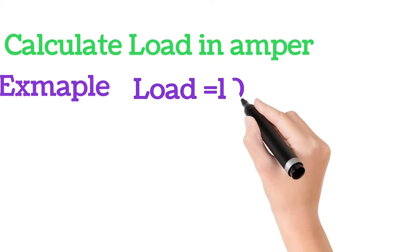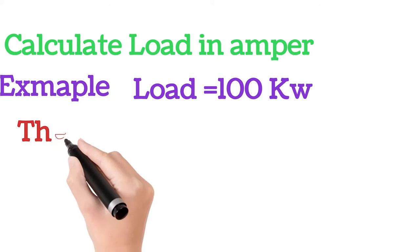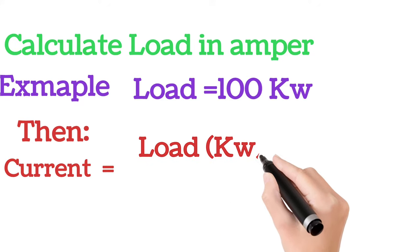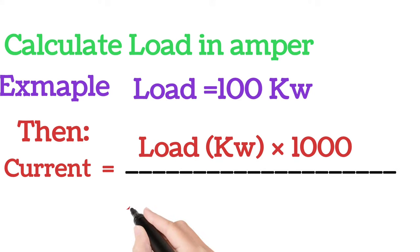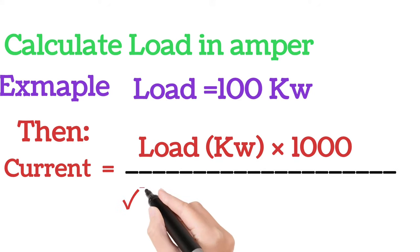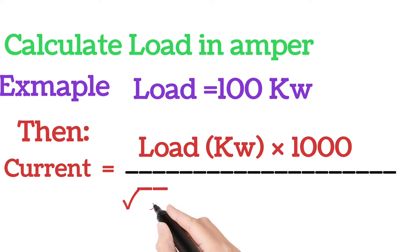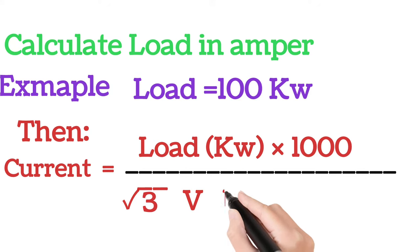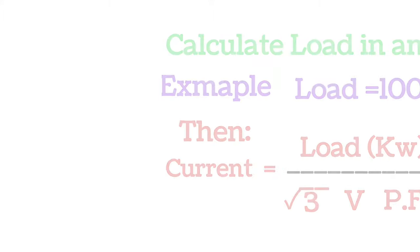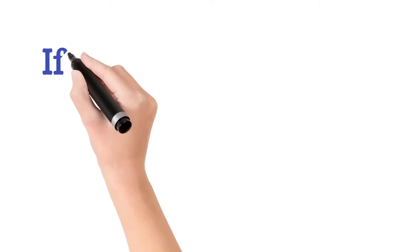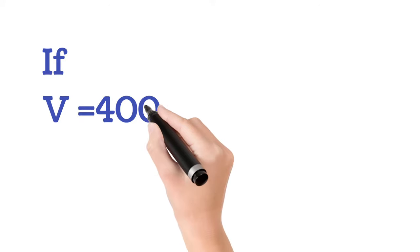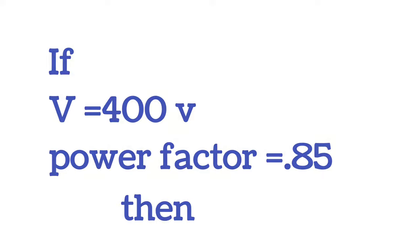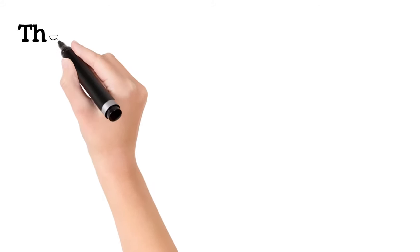Example: if load equals 100 kW, we calculate rated current from this equation. If voltage equals 400 volt and power factor equals 0.85, then current equals...